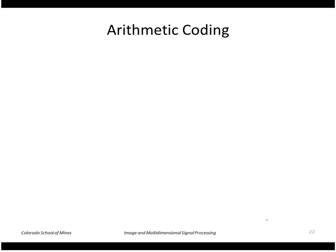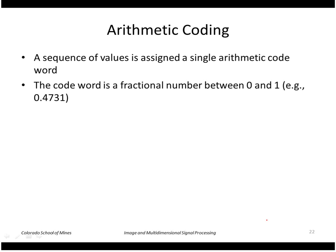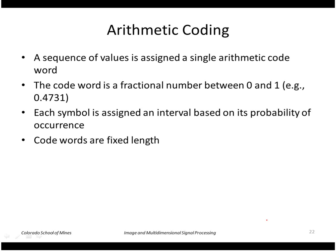Let's look at another lossless coding method called arithmetic coding. Here we don't treat pixels as independent. We look at a sequence of values, let's say a sequence along a single row, and we assign a single code to that sequence. So the code will be a fractional number between 0 and 1, for example 0.4731.